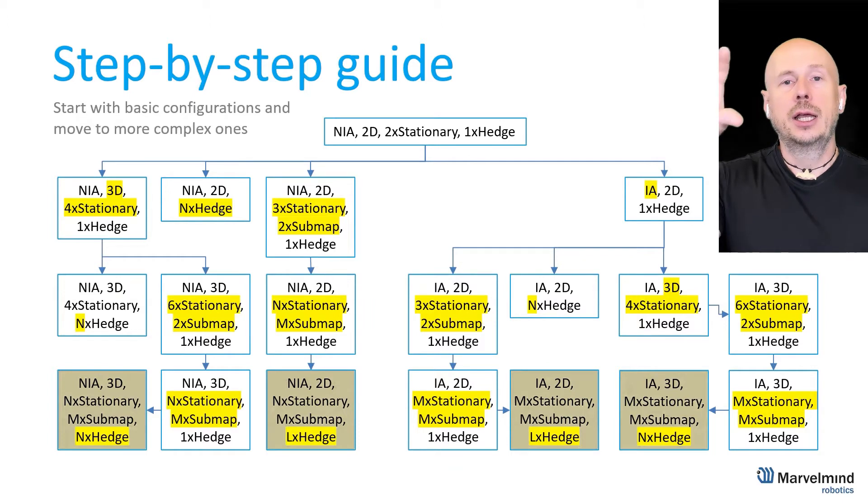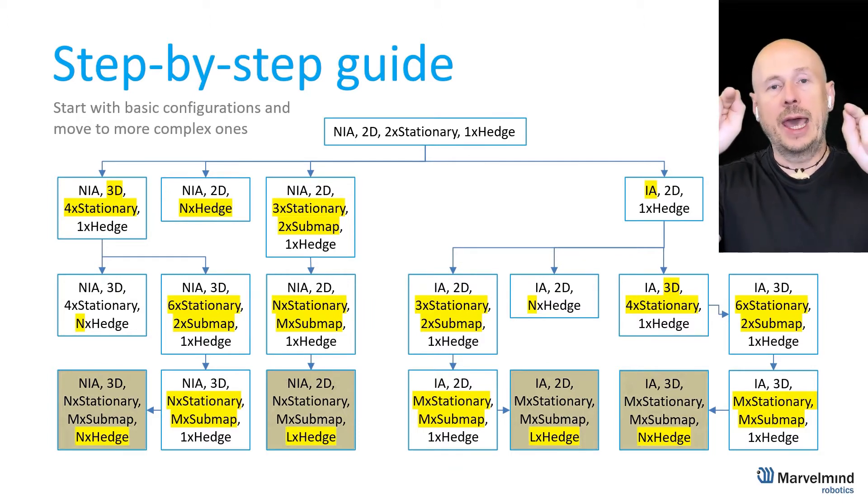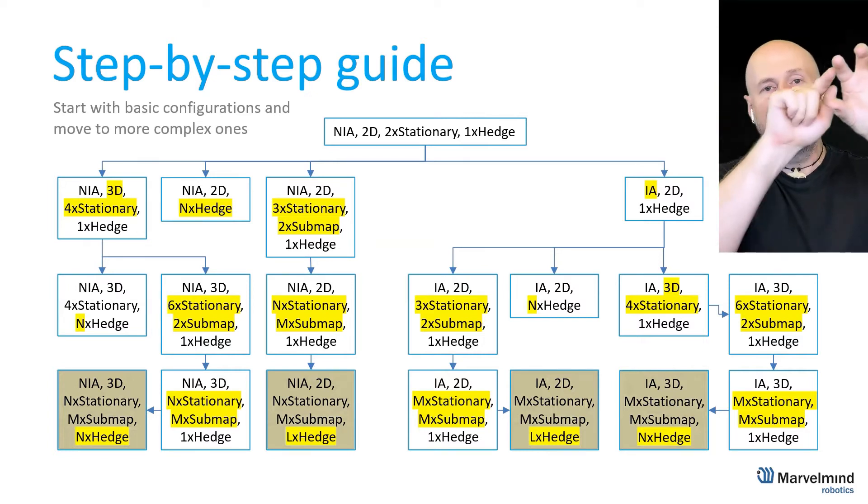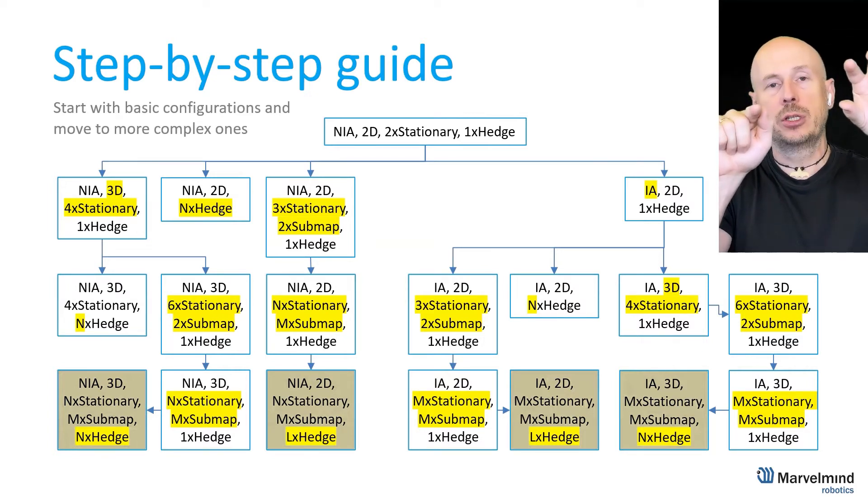But when you build multiple sub maps you must define those service zones anyway. Because otherwise when the beacon, the mobile beacon, the hedge is in this area it must be tracked only by this sub map. But if their maps are not too large then it's possible that some map from this area will be able to attempt to track a beacon in this area.